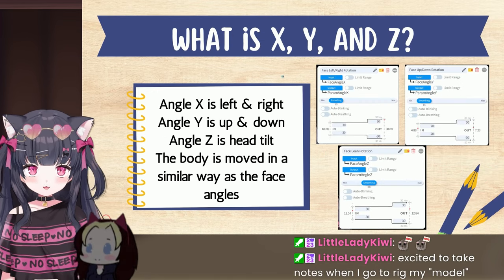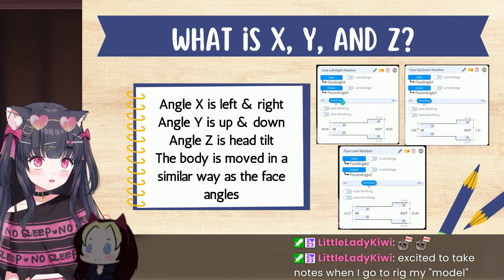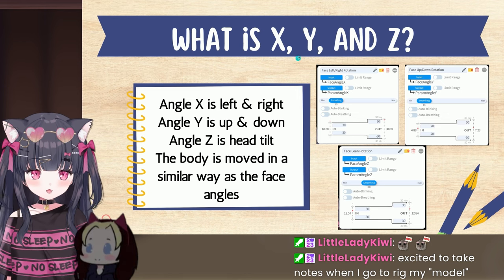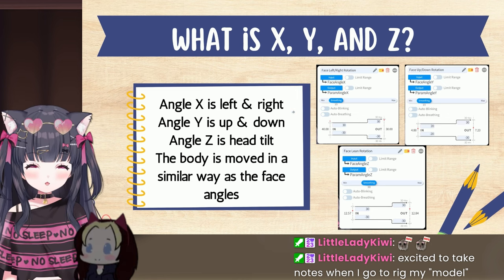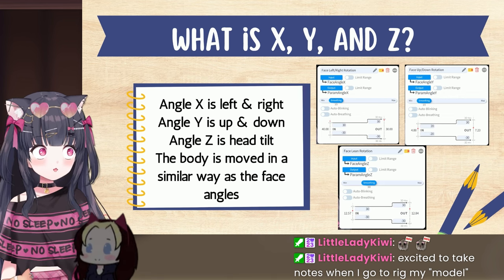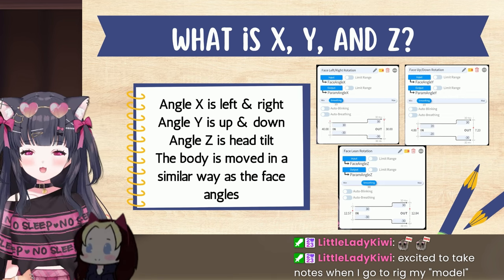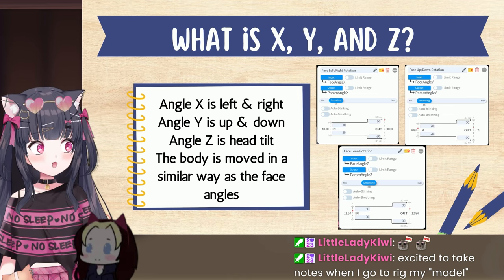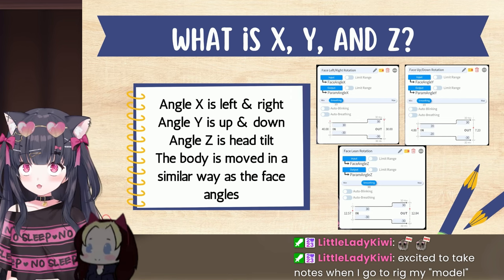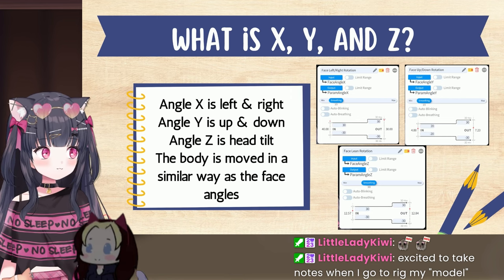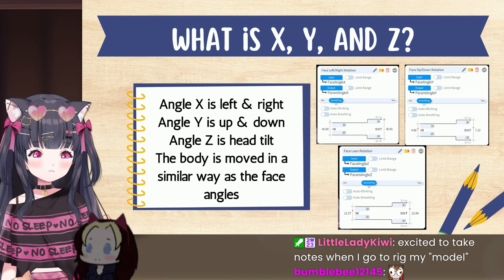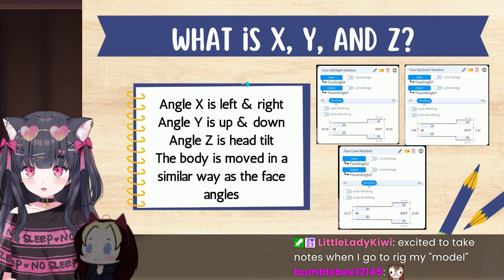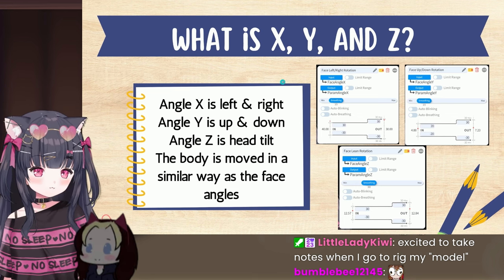So what is X, Y, and Z for Live 2D? As you can see, you might notice 'Face Angle X' and 'Param Angle X' — these are the inputs and outputs of the tracking software you're using to control your VTuber model. I'm using a program called VTube Studio, which captures my face movements and inputs that data into my model.